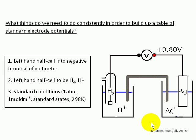And this last example is the measurement of Ag, Ag plus, which comes out as plus 0.8 volts.